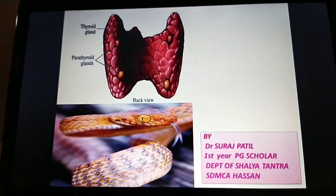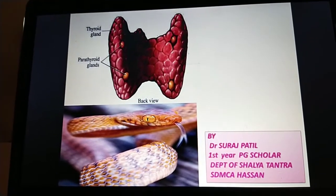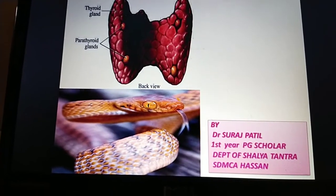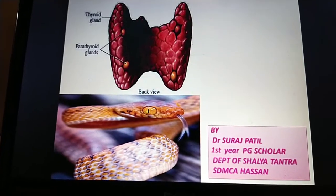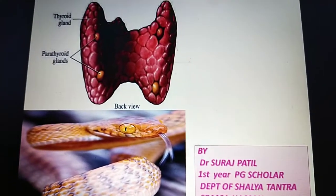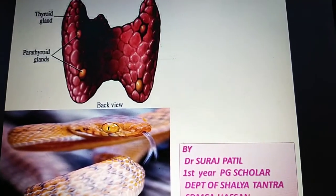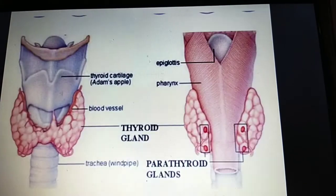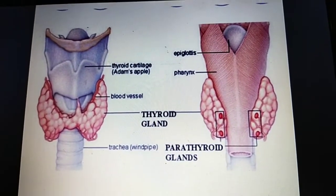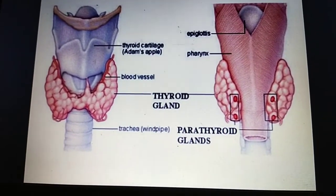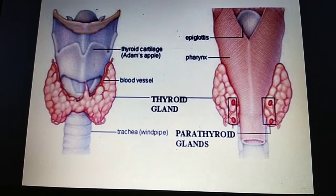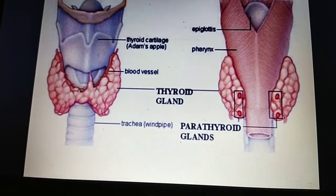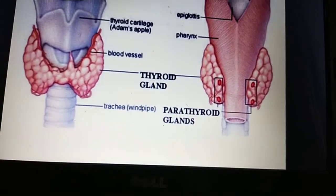The parathyroid glands are four in number in humans and are yellowish in color. They are situated on the posterior aspect of the thyroid gland. These are small endocrine glands in the neck. Humans usually have four parathyroid glands, located on the back of the thyroid gland in variable locations.